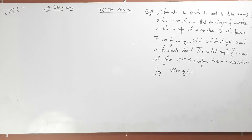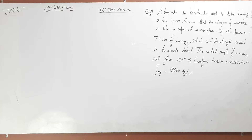Hello guys, welcome to the channel. Question number 21, Chapter 14, HC Verma, Mechanical Properties of Matter. A barometer is constructed with its tube having a radius of 1 millimeter. Assume that the surface of mercury in the tube is spherical in shape. If the atmospheric pressure is equal to 76 centimeters of mercury, what will be the height raised in the barometer tube? The contact angle of mercury with glass is 135 degrees, the surface tension of mercury is 0.465 Newton per meter, and the density is 13,600 kg per meter cube.